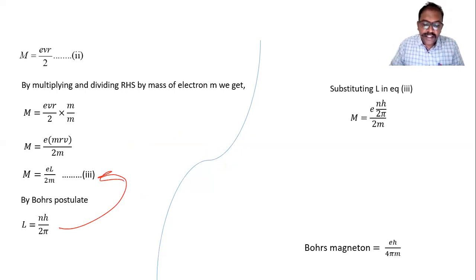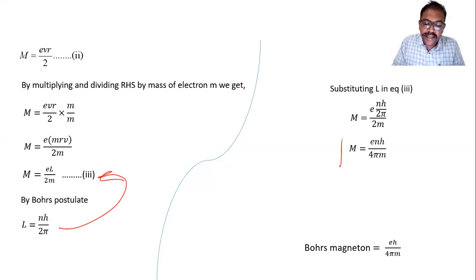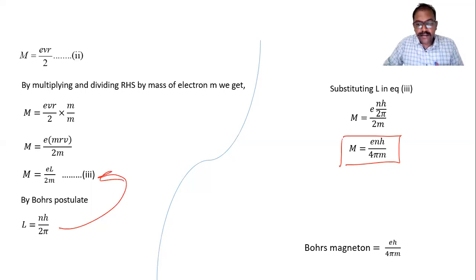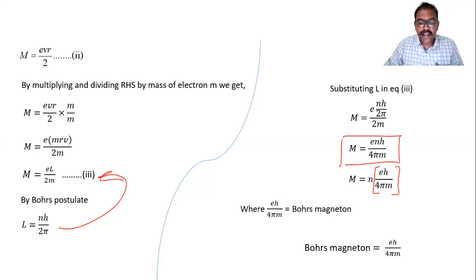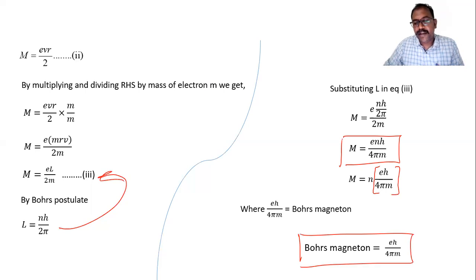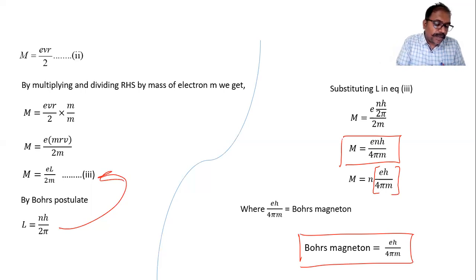After substituting and rearranging, we get M = enh/(4πm). The quantity except n — that is, eh/(4πm) — is Bohr's magneton. So Bohr's magneton is defined as μ_B = eh/(4πm). The question asked to obtain Bohr's magneton formula, and this is the result.